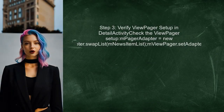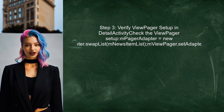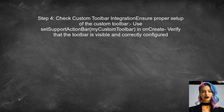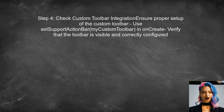Now, verify that the view pager is properly set up in the detail activity. This includes ensuring that the adapter is correctly initialized and that the current item is set appropriately. Additionally, ensure that the custom toolbar is correctly integrated. If the toolbar is not set up properly, it may interfere with the menu display.